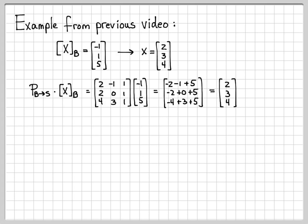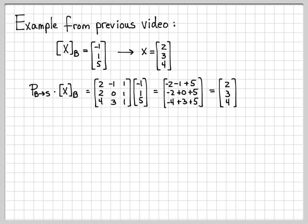So the change of coordinates matrix works just like we think it should. We were able to take a vector written with respect to the basis B, operate on it by this change of coordinates matrix, and end up with a vector in the standard basis that matched our previous computation. In the next problem, we'll work an example where we change from a basis to another basis that isn't the standard basis, and that problem will be a little bit more complicated and interesting.